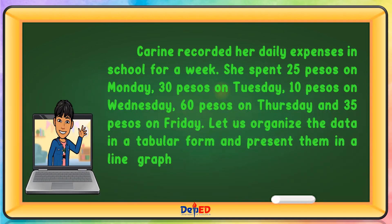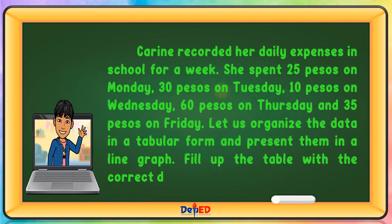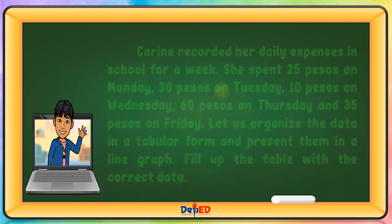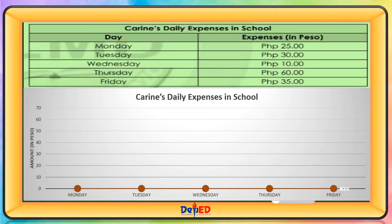Let us organize the data in a tabular form and present them in a line graph. Fill up the table with the correct data. Karine's daily expenses: Monday — 25 pesos, Tuesday — 30 pesos, Wednesday — 10 pesos, Thursday — 60 pesos, and Friday — 35 pesos.